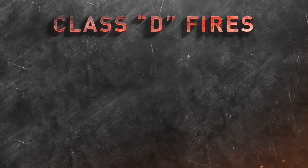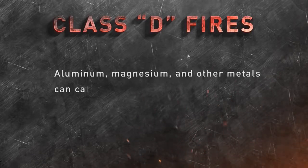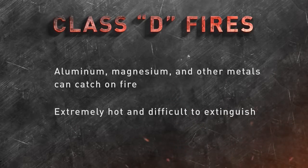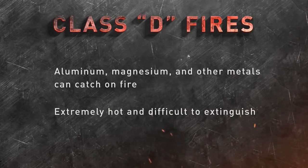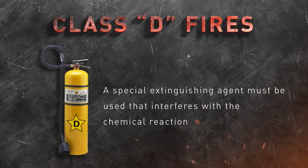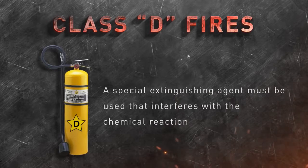Class D. A class D fire is when combustible metals catch fire. Aluminum, magnesium, and other metals can catch on fire. They are extremely hot and difficult to extinguish as they create their own oxygen. A special extinguishing agent must be used that interferes with the chemical reaction.